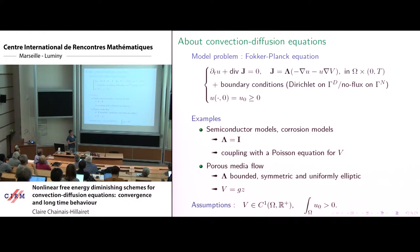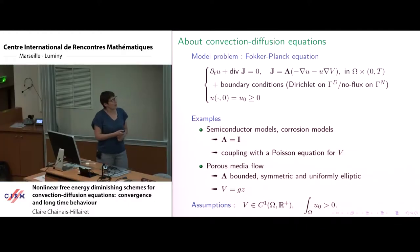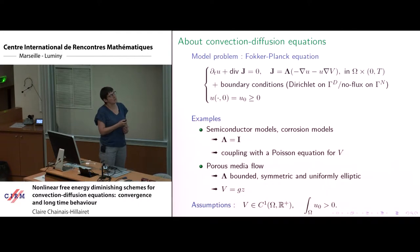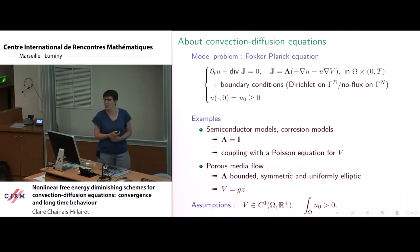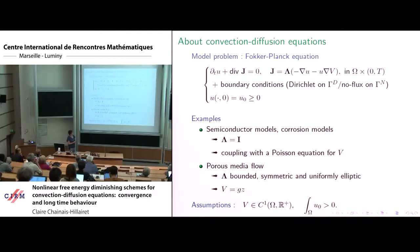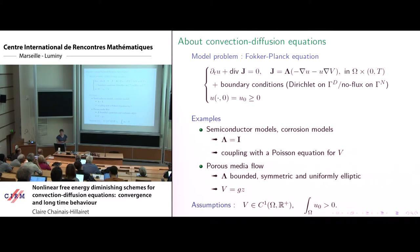The boundary Gamma will be split in two parts. On one part I will have Dirichlet boundary conditions, and on the other part no-flux boundary conditions. It is also supplemented with an initial condition.